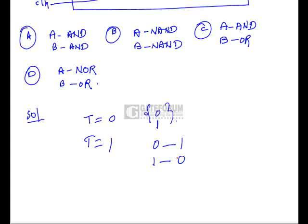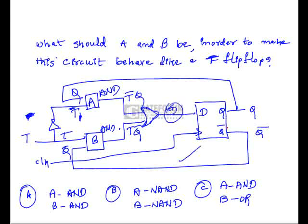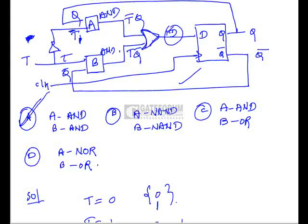To make the D flip-flop behave like a T flip-flop, the equation is D = T̄Q + TQ̄. Both terms are AND operations, so A and B should both be AND gates. With T̄ and Q as inputs to one AND gate and T and Q̄ to the other, the OR of both outputs equals D. Therefore Option A is correct — both should be AND gates.